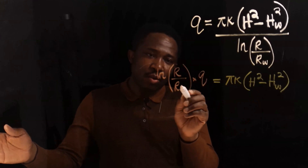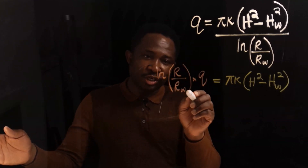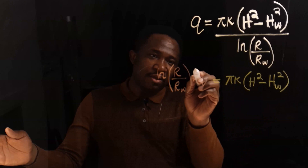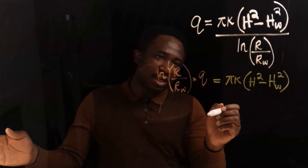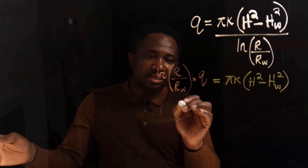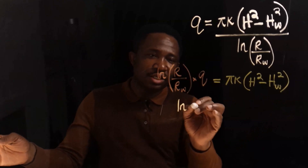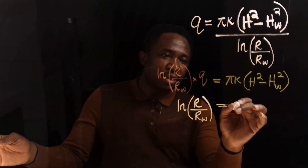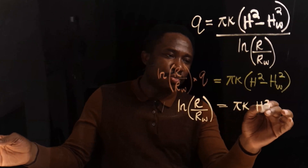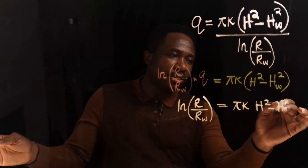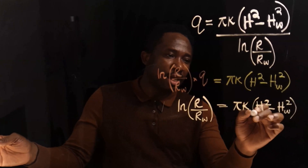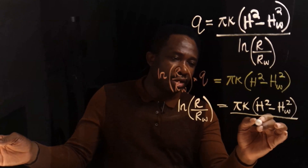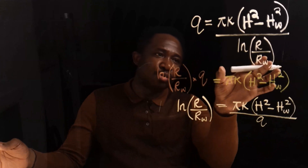Next, our aim is to make R subscript W the subject. This Q will move to the other side, and if a multiplying variable moves to the other side, it will divide. Hence, we're going to have that the natural log of R divide R subscript W will be equal to pi K, in bracket, H squared minus H subscript W squared, and this Q will divide everything on this side.